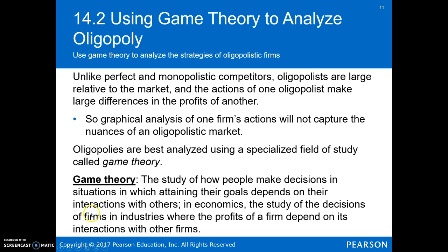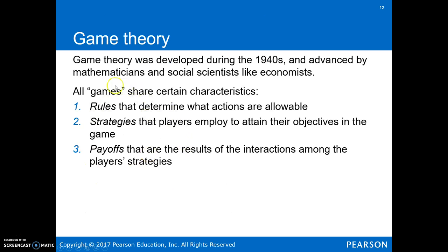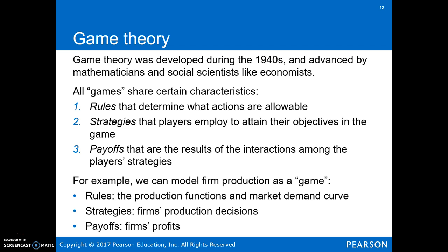With games, there are basic ideas: there are rules that determine what's allowable, players can employ strategies to reach their objectives, and as a result of each player's strategies, each firm receives payoffs. The payoffs are where we see interdependence, because one firm's actions affect another. In our oligopoly game the rules are the production functions and the market demand curve, the strategies are what firms choose to produce, and the payoffs are just the firm's profit.